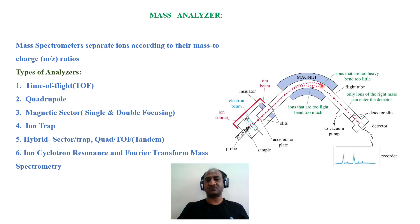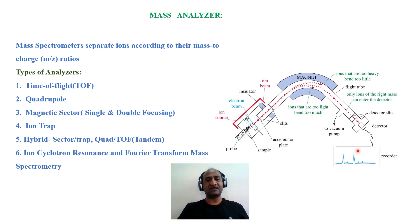As the ions travel, some ions are too heavy so they will bend too little, some ions are too light so they will bend too much, and some ions have a specific velocity that will take a circular path and reach the detector. In the instrument, we change the magnetic field as well as the voltage so that all ions are continuously collected and we get the spectra. This analyzer part is very important and in mass spectrometry we use different types of analyzers.